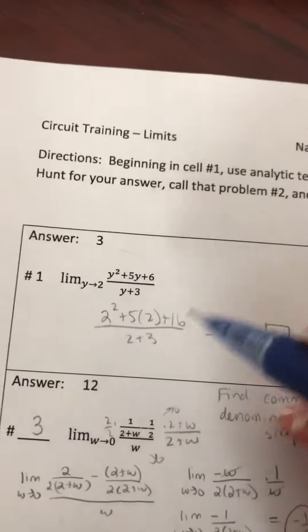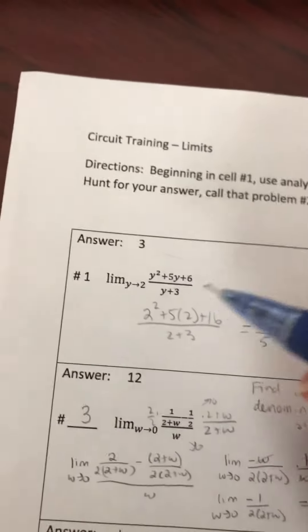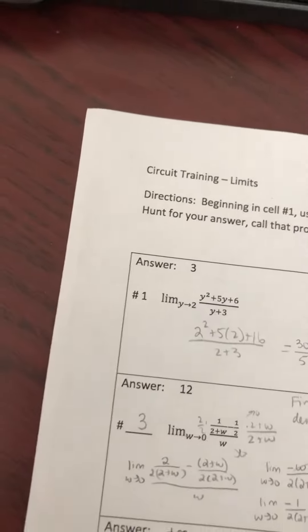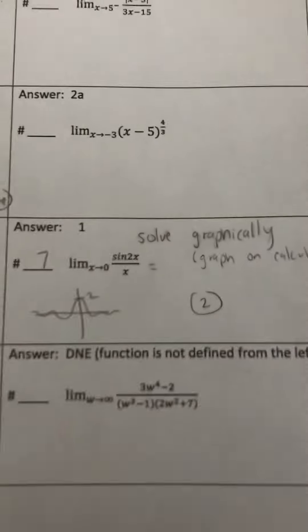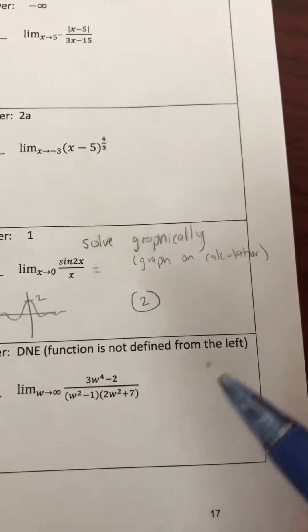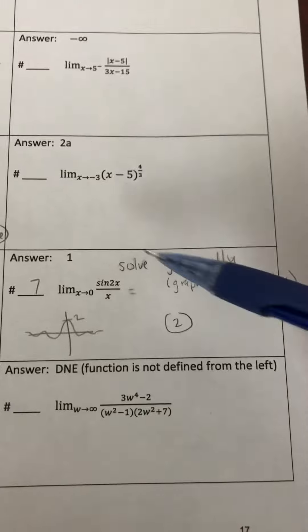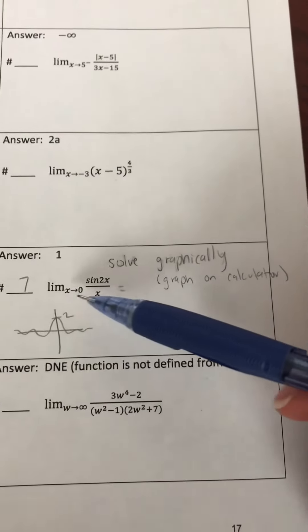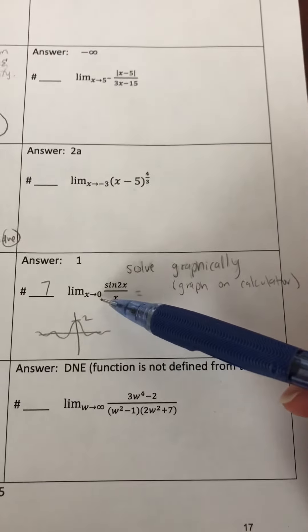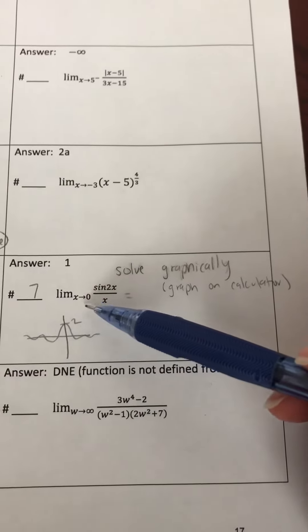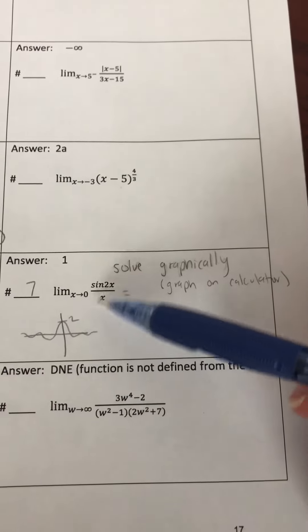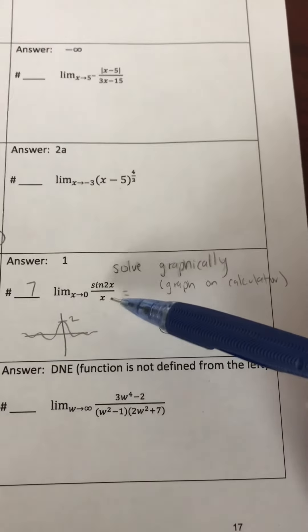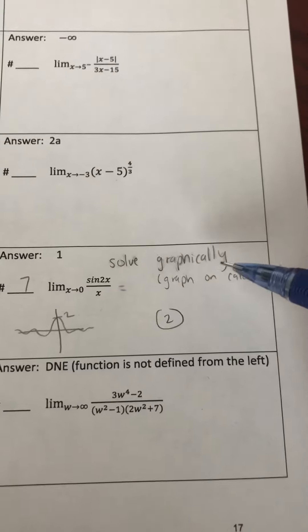There's a couple of these—I think it's number 7—and there's a few of them throughout the worksheet that involve trig. If it's not a limit as x is approaching infinity, but the limit as x is approaching a number, and you end up getting 0 over 0, I just want you to do them graphically for now.